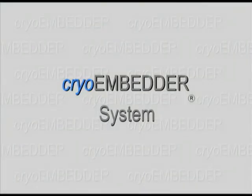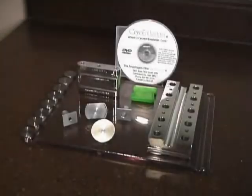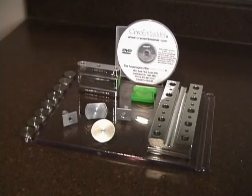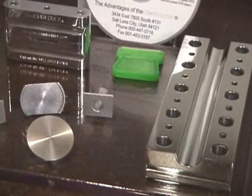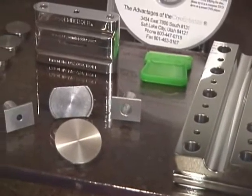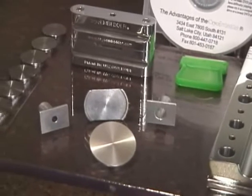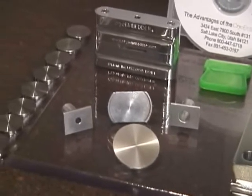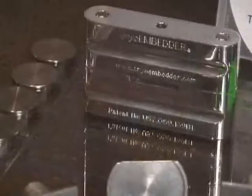The Cryo-Embedder system, a tested and proven method for preparing tissue for frozen sectioning. It consists of a cutting board, chuck holder, cryostat adapters, a trimming blade, flat embedding discs, instructional CD, and the embedding device.